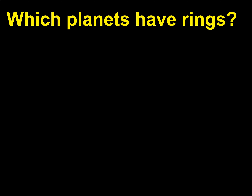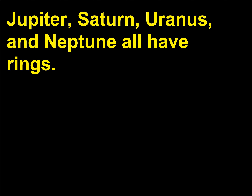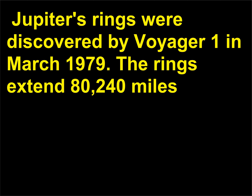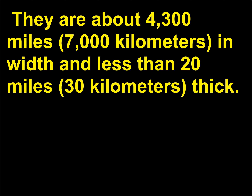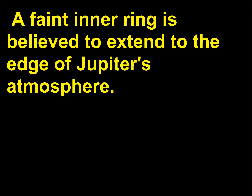Which planets have rings? Jupiter, Saturn, Uranus, and Neptune all have rings. Jupiter's rings were discovered by Voyager 1 in March 1979. The rings extend 80,240 miles, 129,130 kilometers, from the center of the planet. They are about 4,300 miles, 7,000 kilometers, in width and less than 20 miles, 30 kilometers, thick. A faint inner ring is believed to extend to the edge of Jupiter's atmosphere.